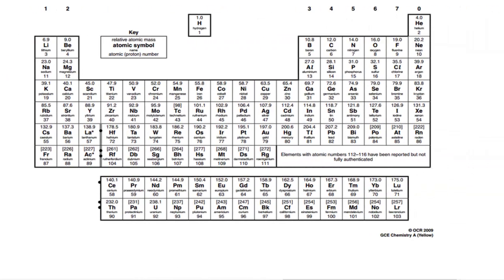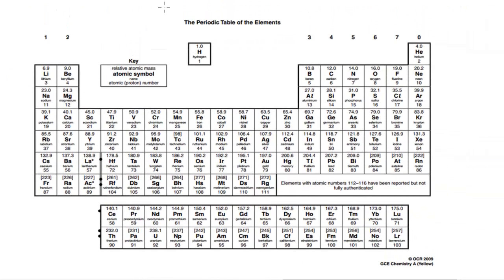In this video I'm going to be taking a look at the trend in reactivity as we go down group 7. Now, the elements in group 7 are often referred to as the halogens.